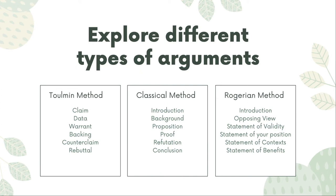The Toulmin method of argumentation works to support a claim with reference to clear data, sometimes called the grounds. These data are factual and convincing. The data is then discussed by the warrant or the bridge, which explains quite explicitly why the data supports the claim. Long-form arguments will often have more than one set of data and warrants that treat an important support for the claim. So you can imagine writing an essay with one major claim, and the essay works by having different sets of data and warrants that ultimately support that major claim. Of course, all of these methods also involve anticipating counter-claims or counter-arguments to your position, and addressing those as best you can.